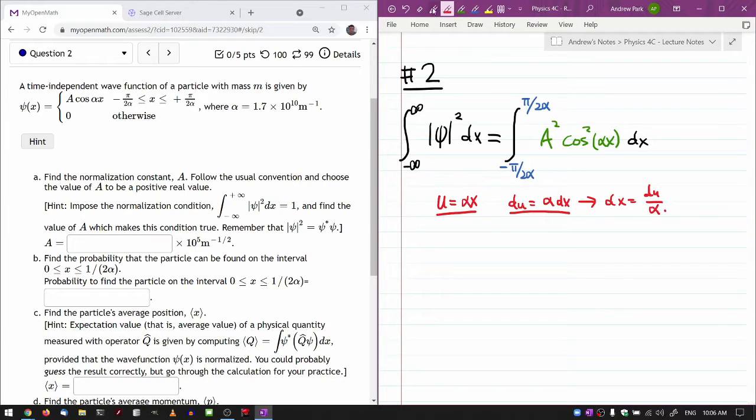Now this is how I like to do u substitution or algebraic substitution with definite integrals. As I'm substituting in the new expression, I also do the limits of integration. So to get the limits in terms of u, what I do is I plug in minus pi over 2 alpha into the x here. Then resulting value gets me the lower limit in terms of u. So that's going to be minus pi over 2 alpha times alpha, alpha cancels out. So I'll get minus pi over 2.